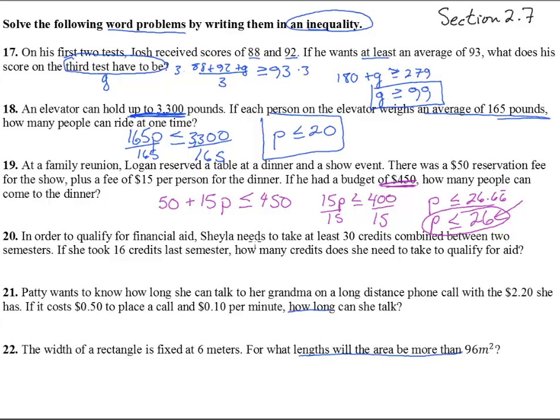Number 20, in order to qualify for financial aid, Shayla needs to take at least - notice this - at least 30 credits combined between two semesters. So she took 16 one semester. On the next semester, this is going to be our x, and it has to be at least 30 credits. So subtract that, and we get x needs to be greater than or equal to 14. You could write credits in there if you wanted. Credits have to be greater than or equal to 14.